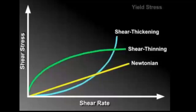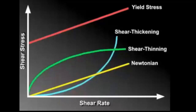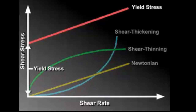For a yield stress fluid, the fluid does not begin to flow until the yield stress is reached. This is shown by plotting the curve above the origin. The distance from the y-intercept to the origin is the yield stress. We have drawn the yield stress curve as a straight line, indicating that once it begins to flow, it behaves like a Newtonian fluid.